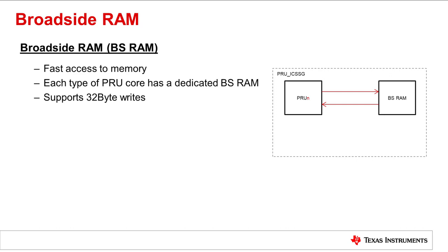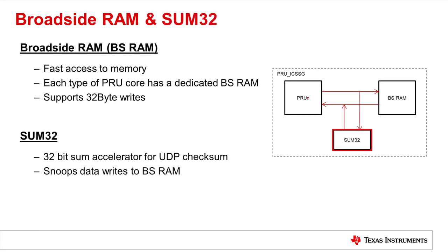The PRU ICSSG also supports a new type of RAM called broadside RAM. Because this RAM is attached to the broadside interface, it has the lowest access latency of any PRU ICSSG RAMs and supports 32-byte writes. The PRU ICSSG cores each have their own dedicated broadside RAM, although the size and number of instances differs between devices. The PRU ICSSG also has a 32-bit sum accelerator called SUM32 that can be used to calculate a UDP checksum in Ethernet applications — it continuously monitors and sums data writes to the broadside RAM. Each PRU ICSSG core has a SUM32 accelerator, although the number differs between devices.